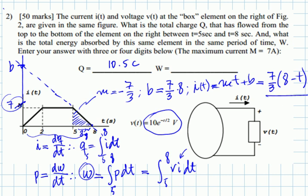So we see this is our current as a function of time between 5 and 8. All we have to do is, between 5 and 8, we multiply 7 thirds times 8 minus T, that's the current, times the voltage, 10 exponential of negative T over 2. And that should be the energy we are looking for, between 5 and 8.